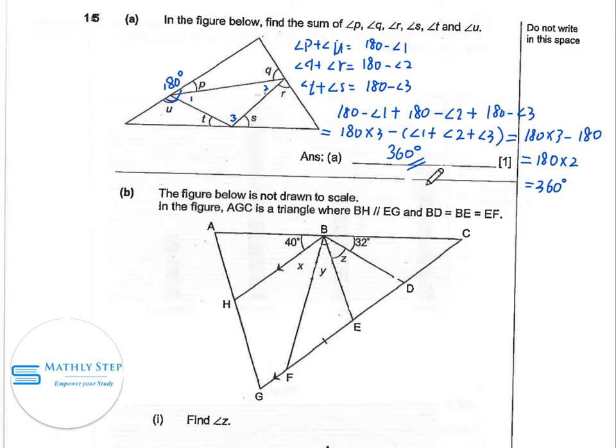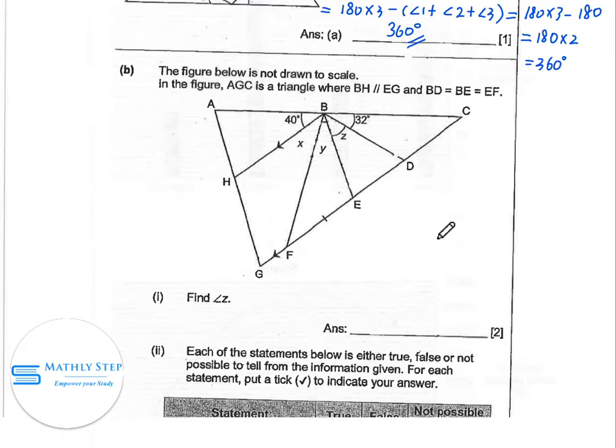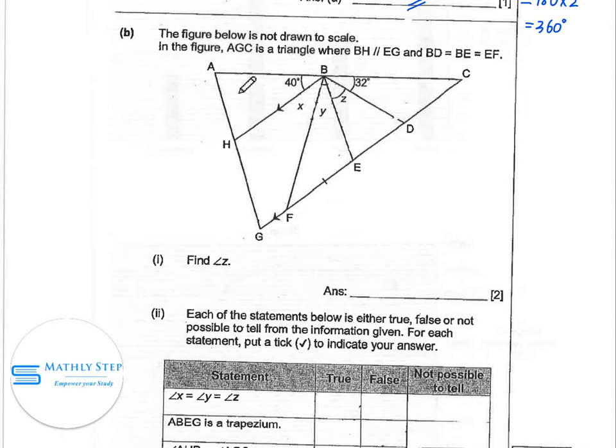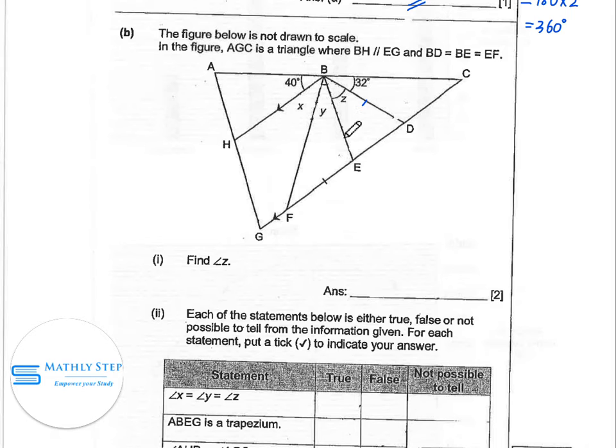For question B, the figure below is not drawn to scale. In the figure, AGC is a triangle where BH and EG are parallel with each other and BD and BE and EF they are equal. So for question 1, find the angle Z.